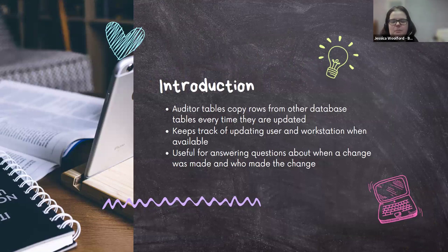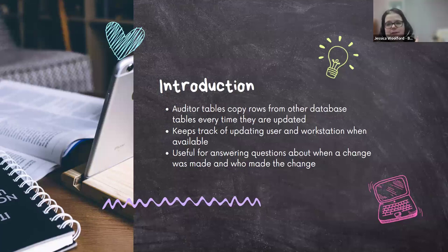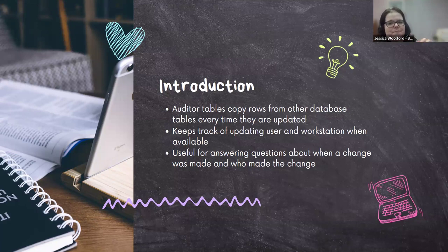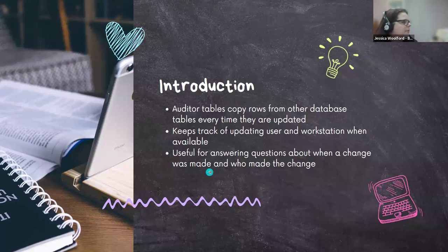So a little introduction about what auditor tables are and what they do. Auditor tables basically take a copy — like a snapshot — of a row in the database every time it's updated. They also keep track of, if the information is available, the user that did the updating and the workstation where it was done. If you're making updates directly in the database, obviously that information is not going to be in there, and sometimes something happens in the background and the information doesn't get put in there. But if that information is available, it will be included, and it's really useful for answering questions about when a change was made and who made the change.